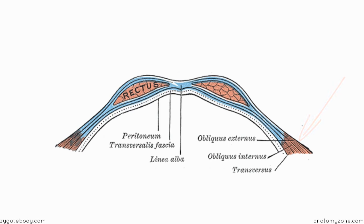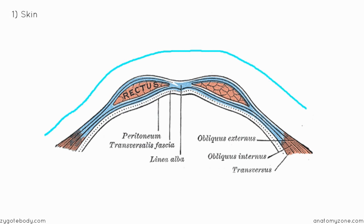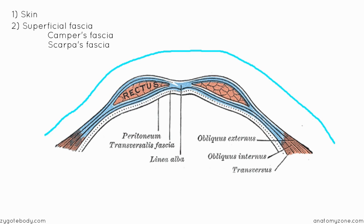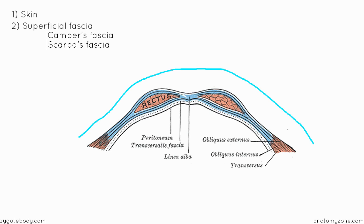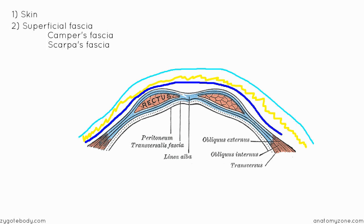The first thing we'd pass through is the skin. Next, we'd pass through the superficial fascia, which consists of two layers: the superficial fatty layer called Camper's fascia, and the deeper membranous layer called Scarpa's fascia. A helpful mnemonic: the letter C comes before S, so Camper's is more superficial than Scarpa's fascia.